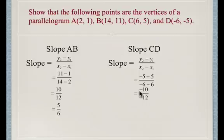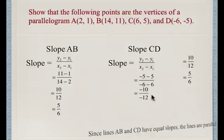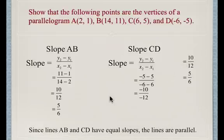When you divide it, the negative signs cancel out, and so you end up with 10 over 12. 10 over 12 reduces to 5 over 6, so since lines AB and CD have the equal slopes, these lines are parallel.